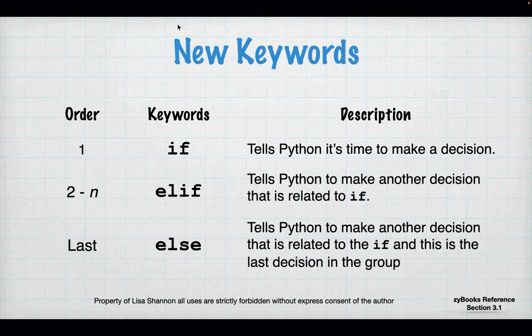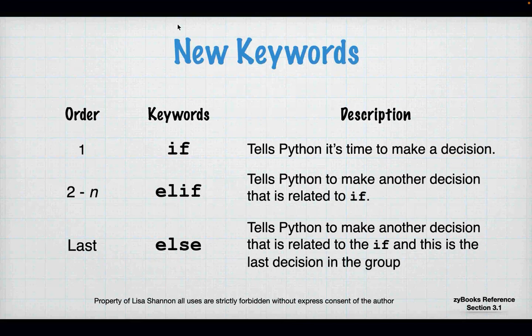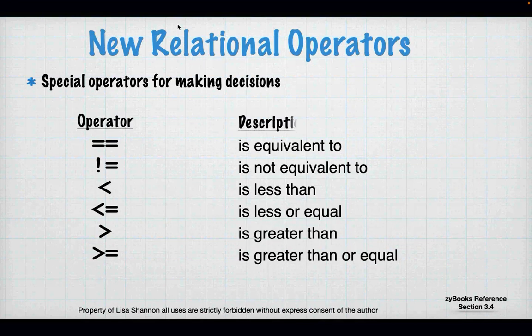'Else' basically says: of all these related questions, if nothing else matches, do the code that's here. Those are three new keywords — if, elif, and else — and it's important to understand their order and how they relate to one another. Now we also have some new relational operators.